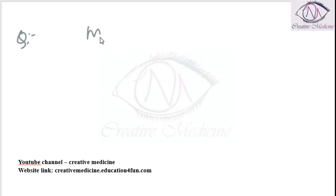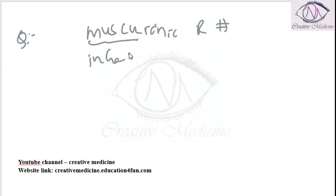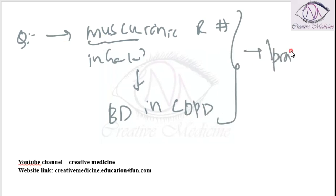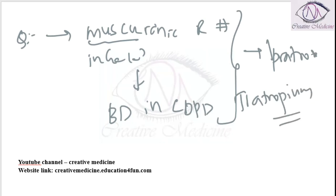Which is the muscarinic receptor blocker that is administered by inhalation and causes bronchodilation in a patient with COPD? Ipratropium and tiotropium are the muscarinic receptor blockers which cause bronchodilation in COPD.